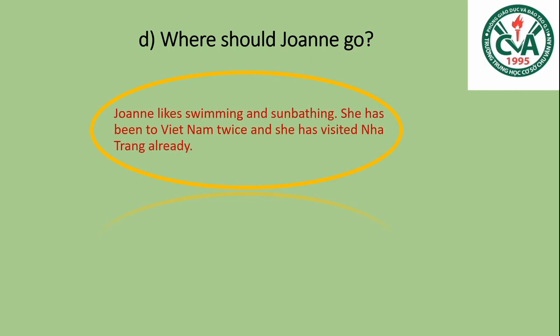Johnny likes swimming and sunbathing. She has been to Vietnam twice and has already visited Nha Trang. Johnny rất thích bơi và tắm nắng, nhưng cô ta đã đến Việt Nam 2 lần rồi và cũng đã đến thăm Nha Trang. Như vậy Nha Trang đi rồi - còn nơi nào có biển nữa không? Đà Lạt, Sapa, Nhà Rồng không có biển. Như vậy chỉ có một điểm là Hạ Long Bay. Mình sẽ stick vào Hạ Long Bay.